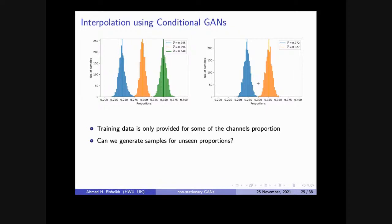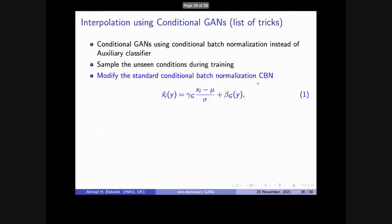We utilized a specific set of tricks which can be summarized in three points — though this needs to be gone through in the real paper, which is almost in final review for Computer Geosciences and will be posted on arXiv next week. There are two flavors of conditional GANs: conditional batch normalization and auxiliary classifier GANs. We used conditional batch normalization. We started with auxiliary classifier because it's easier conceptually, but obtained better results with conditional batch normalization.